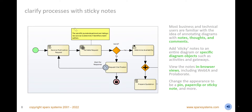Clarify processes by adding sticky notes to your diagrams to record notes, thoughts, ideas, and comments. Apply the notes to an entire diagram or attach them to individual elements such as activities and gateways or connectors. Change the appearance of the note, including its color and style, and how it is applied using a pin, paper clip, or sticky edge. You can also add comments and discussions using the tool's collaboration features.